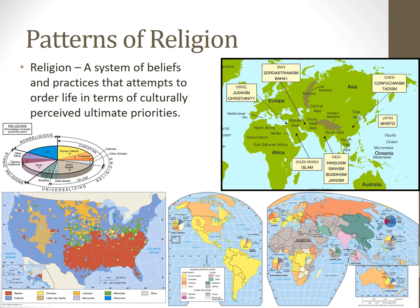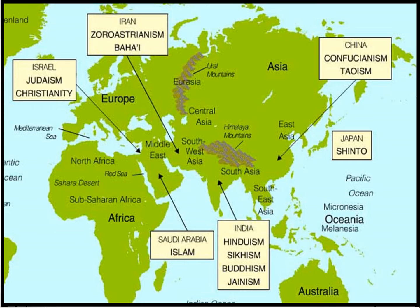Now let's take a look at patterns associated with religion. Religion is a system of beliefs and practices that attempts to order life in terms of culturally perceived ultimate priorities — whether that is to make it to heaven or reaching a state of enlightenment. There is some ultimate goal that structures the beliefs and practices of religious followers. The Middle East hearth is the hearth for Judaism, Christianity, and Islam — what are commonly called the Abrahamic religions due to their shared history traced back to Abraham.